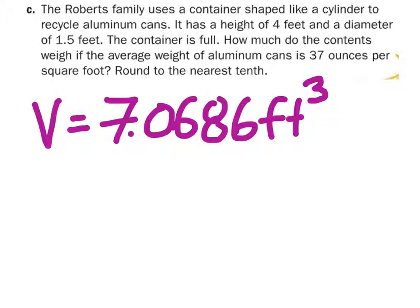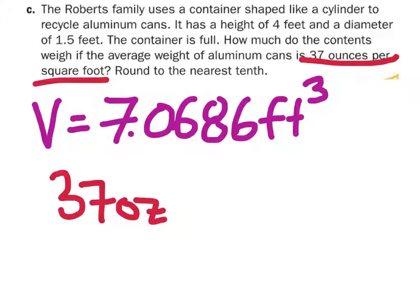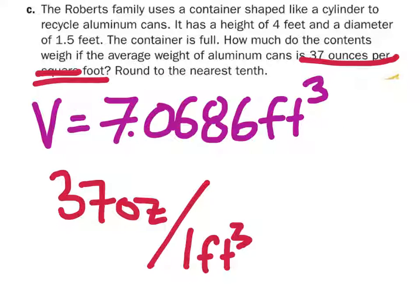So, the contents weigh. We want the weight of this garbage. So, what we're going to do is multiply the two together. You see, because what happens here is you've got 37 ounces per for every square foot. Foot squared. I think that means cubic foot. That should be cubed foot. So, how many cubic feet do we have? 7.0686. So, since we have 7.0686 cubic feet, and it's 37 ounces for every cubic feet, you're just going to multiply the two together.